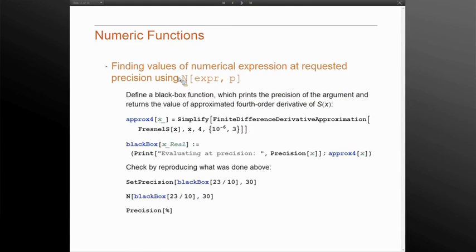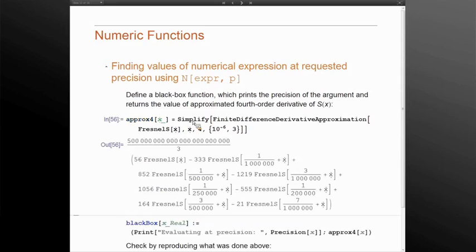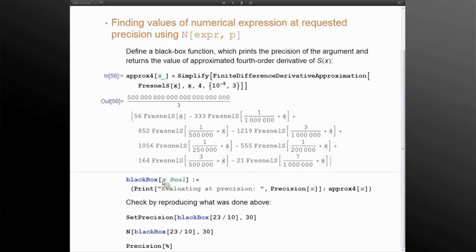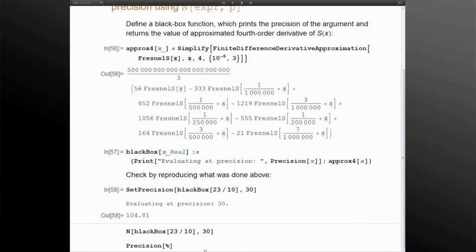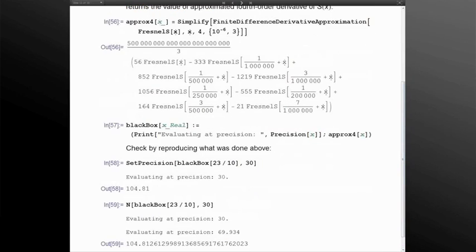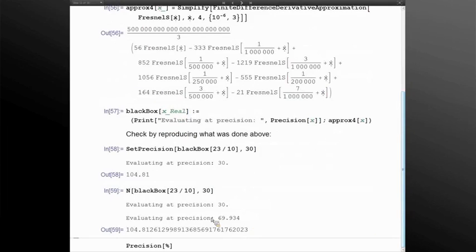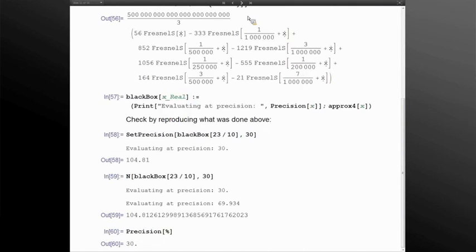We have a wonderful function called N, which finds the numerical value of the expression. Let's evaluate the symbolic expression for that fourth-order derivative and produce a black box function which takes in a real, prints the precision of the input and computes that approximation. When we evaluate something to precision 30 we get back what we had. Now, if we ask N to do stuff, then we will see that Mathematica automatically raised precision to get us the necessary precision, the requested precision of the output.